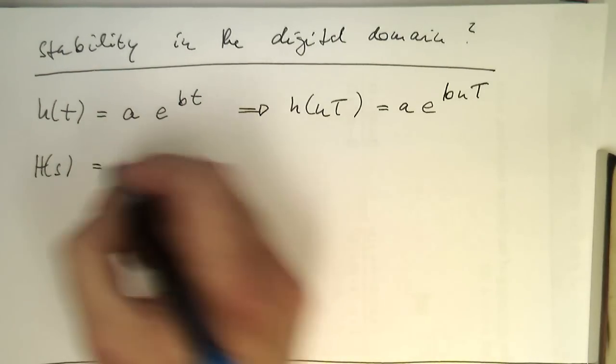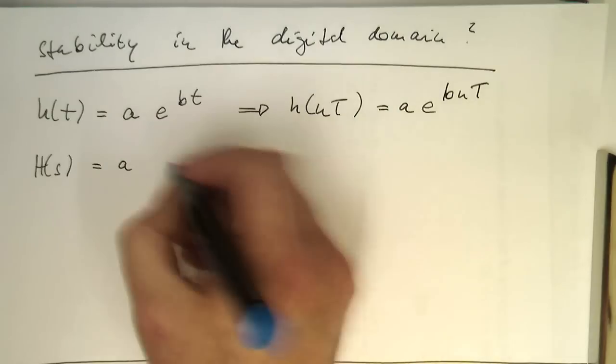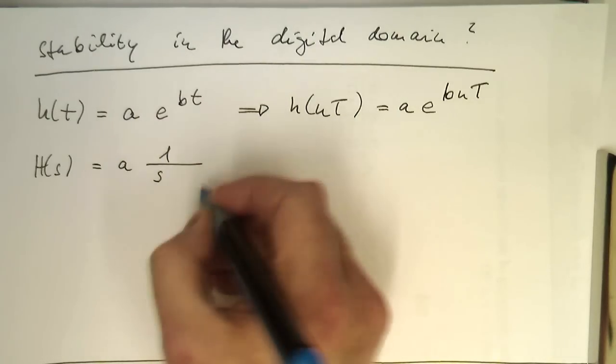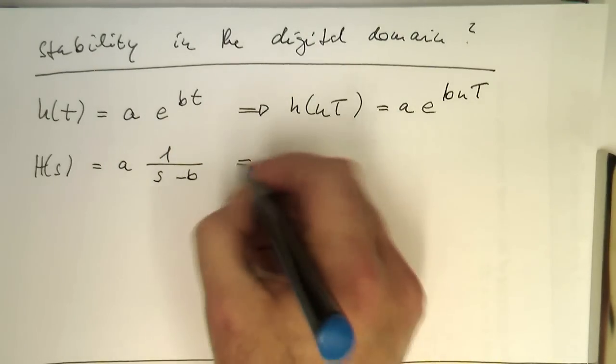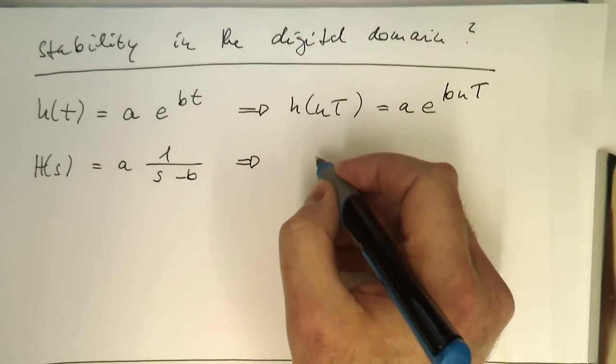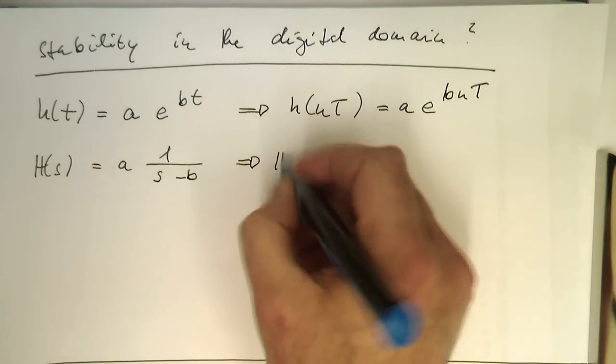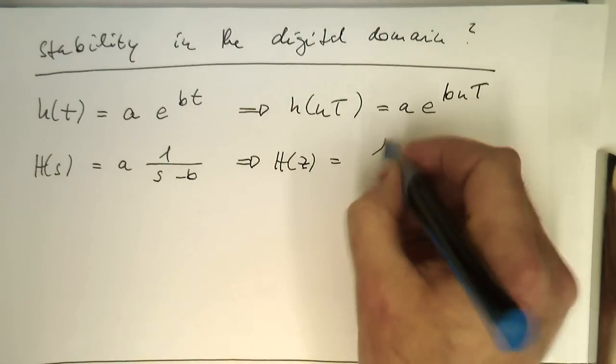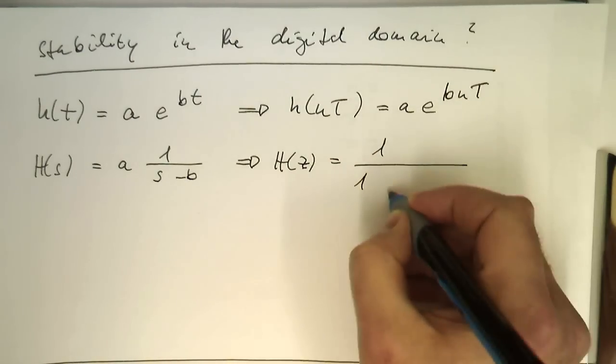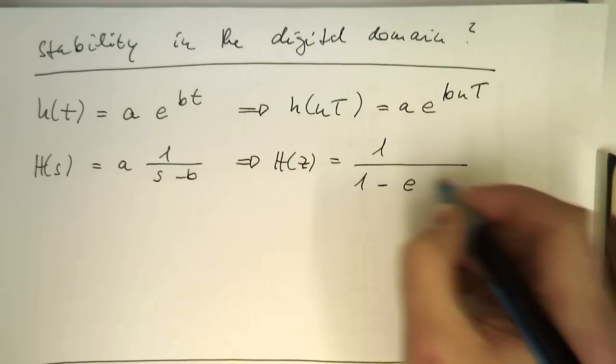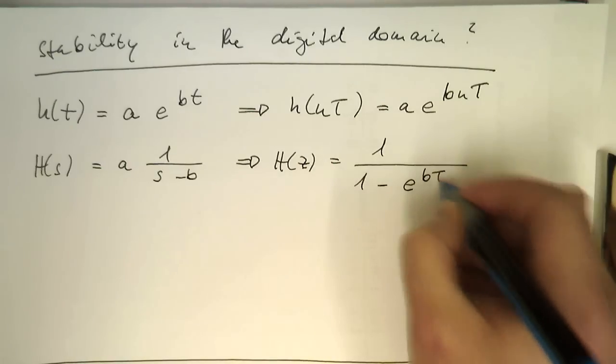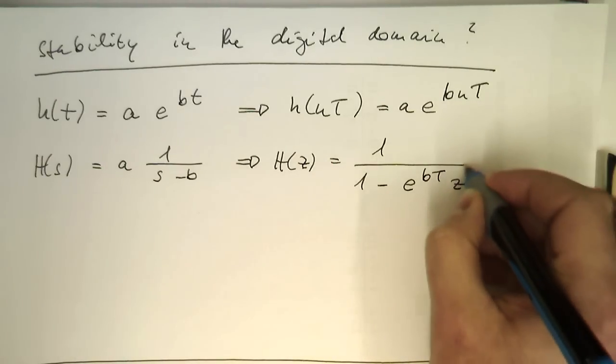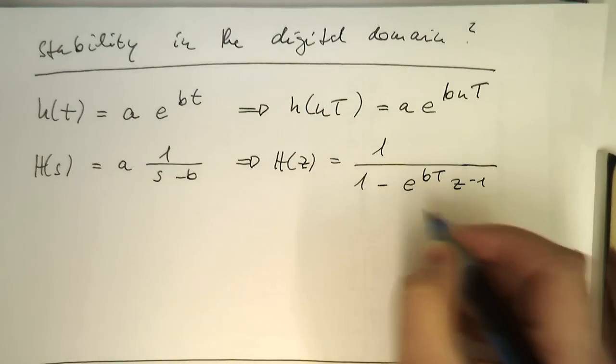Then the H(s) is 1 over s minus b. And so this turns into our H(z) equals 1 over 1 minus then e to bT z to minus 1.